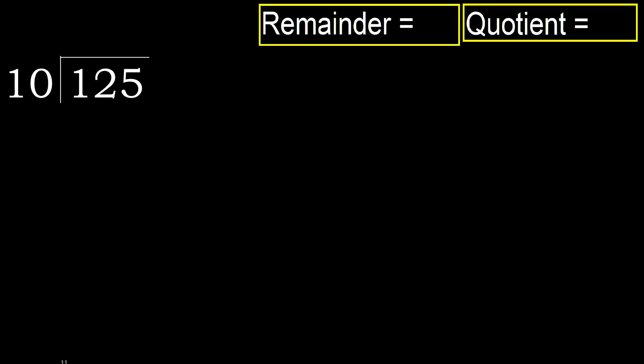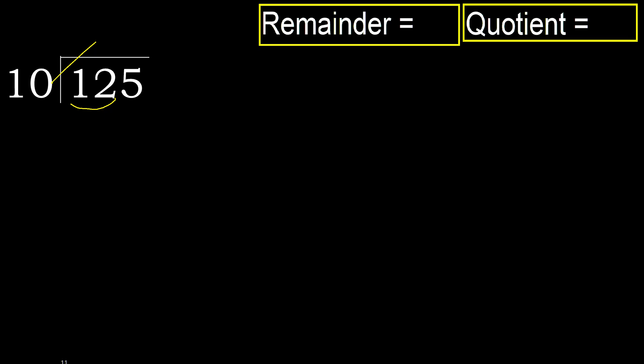125 divided by 10. 1 is less, therefore next. 12 is not less, therefore with 12. 10 multiplied by which number is nearest to 12 but not greater?